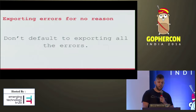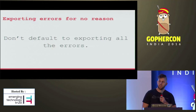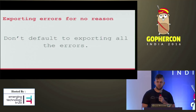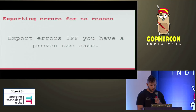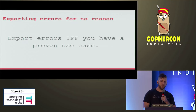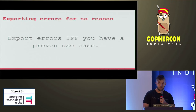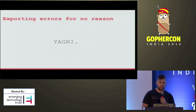Don't export errors for no reason. When you export errors, it's part of the API. You should try to keep your API tidy and tiny. If you export all your errors, then you're not doing this. So when you export an error, you should know why you're doing it. Export your errors if and only if you have a proven use case for what you're going to do with that error if you catch it. Otherwise, just return an anonymous error that's not exported. Most of the time you're not going to need them anyway.